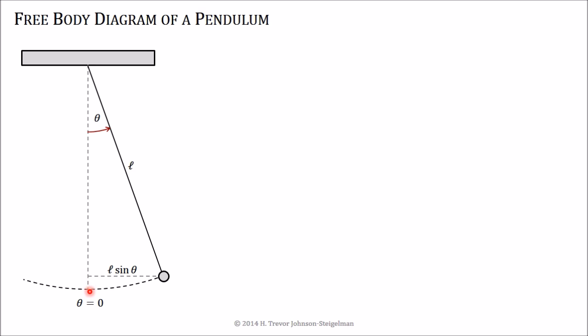We're going to measure around that equilibrium point, similar to the way we've looked at springs. We're going to have positive go off to the right, and as it swings back the other direction, if it passes the equilibrium point, it goes into the negative.